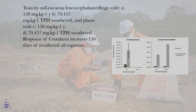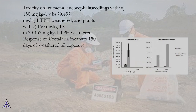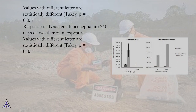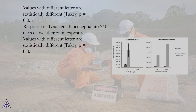Toxicity on Leucaena leucocephala seedlings with (a) 150 mg·kg⁻¹ and (b) 79,457 mg·kg⁻¹ TPH weathered, and plants with (c) 150 mg·kg⁻¹ and (d) 79,457 mg·kg⁻¹ TPH weathered. Response of Crotalaria incana to 150 days of weathered oil exposure. Values with different letters are statistically different (Tukey, p = 0.05). Response of Leucaena leucocephala to 240 days of weathered oil exposure. Values with different letters are statistically different (Tukey, p = 0.05).